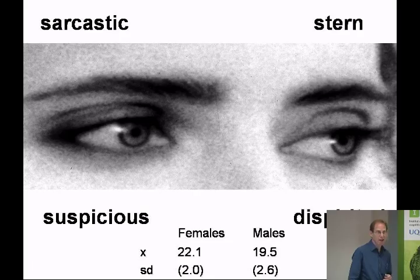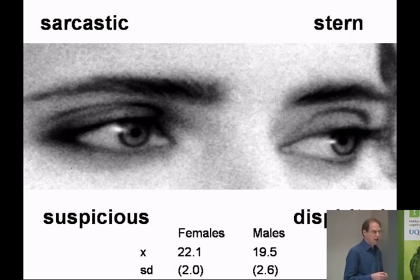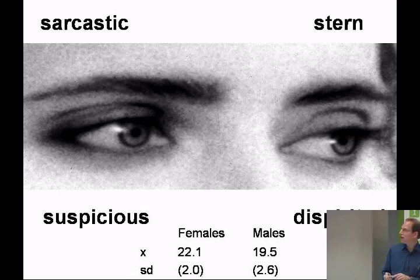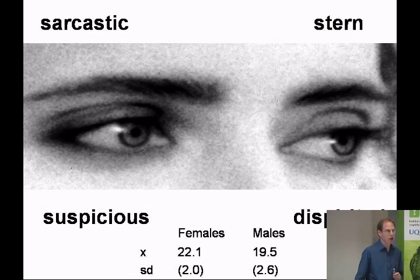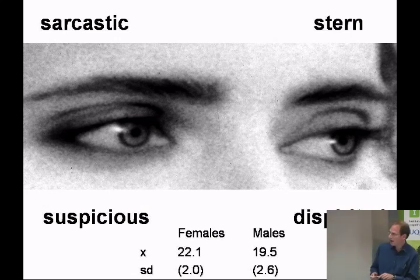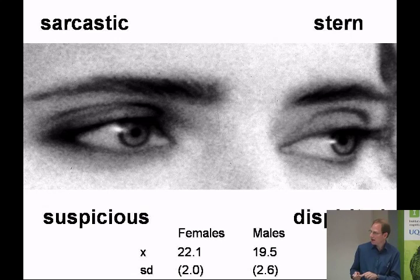Another way to study empathy is to use performance tests — not just self-report, which might be open to biases, but actually asking people to judge what someone is thinking or feeling. This test is called the Eyes Test. You look at photos of facial expressions, just the eye region, and pick which of four words best describes what the person is thinking or feeling. The correct answer here is 'dispirited' — she's a little bit sad. If you got that right, you did it on the basis of quite minimal cues from facial expression. Again, we see in the general population a small but significant sex difference: women on average score slightly higher than men. These performance tests are revealing individual differences in empathy.